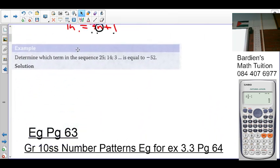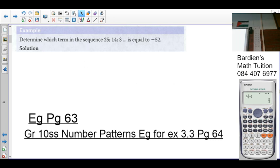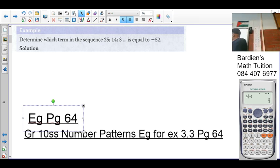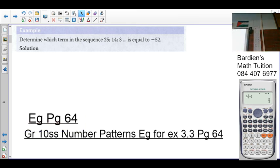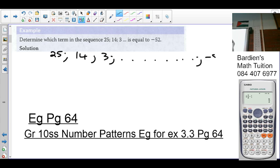Now we are told to determine, this is on page 64, which term in the sequence 25, 14, 3, and so on is equal to negative 52. So what does that mean? You have to consider the sequence: 25, 14, 3, and the sequence carries on and on and on till negative 52. They want to know what is that position number. They want you to calculate n.